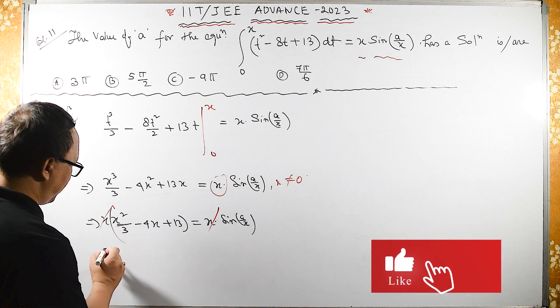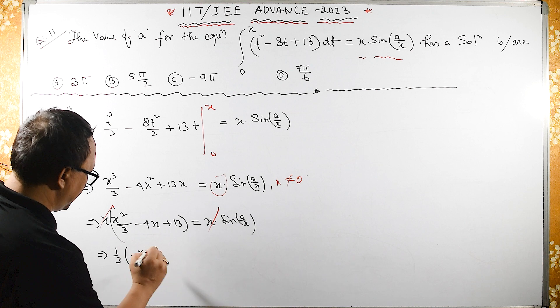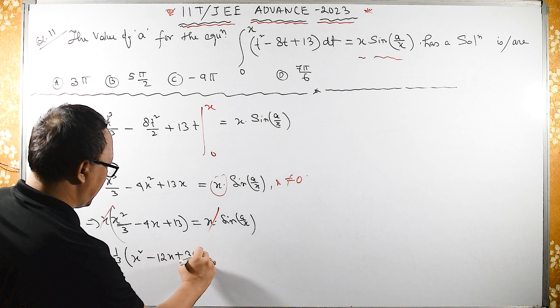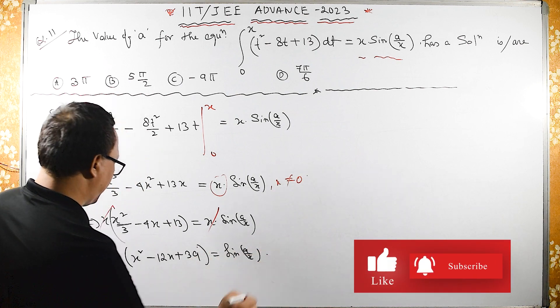Let us make X² coefficient free. I am taking 1/3 common, so X² - 12X + 39 equals sin(A/X).